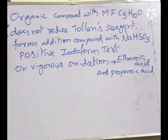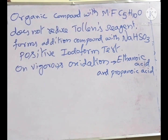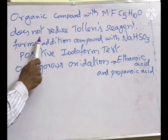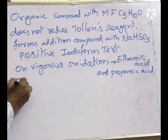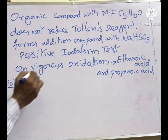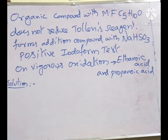You can see this problem. An organic compound with molecular formula C5H10O does not reduce Tollens reagent. So we should start with their clues one by one. Molecular formula is C5H10O — it is an oxygen-containing compound. And it does not reduce Tollens reagent. Tollens reagent is a weak reagent.